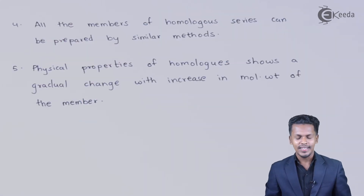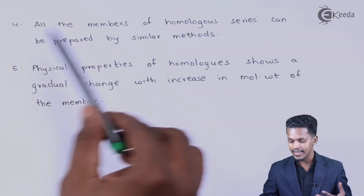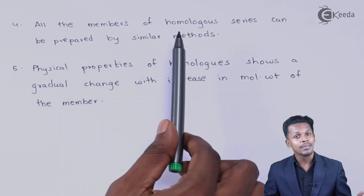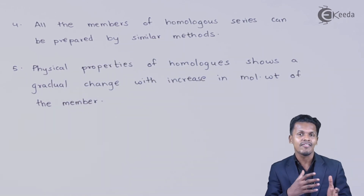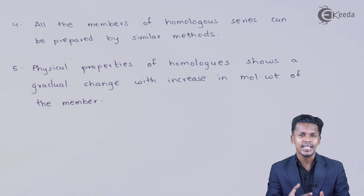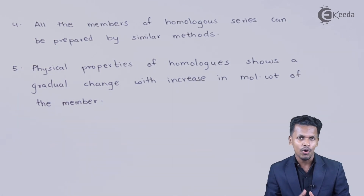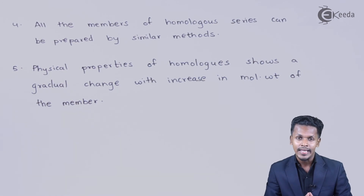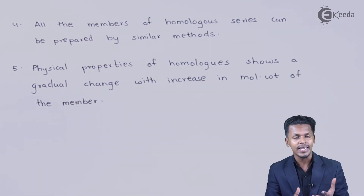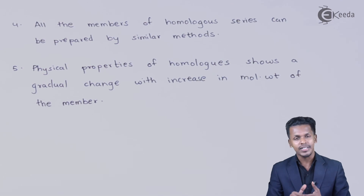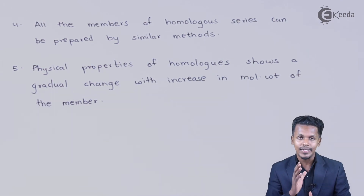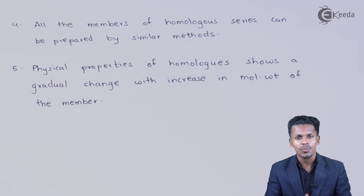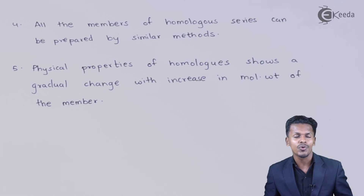The fourth characteristic is that all members of a homologous series can be prepared by similar methods. Because they have the same kind of physical and chemical properties, it is easy to understand that the method of preparation is almost the same for all members of a particular homologous series, whether it is ethane or another member of the series.